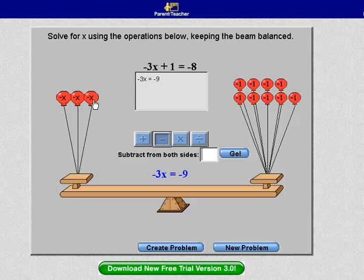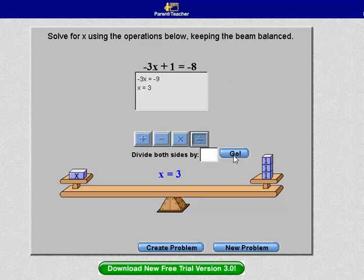So now we have negative 3x equals negative 9. Now I'm going to divide by that coefficient of negative 3, and hit Go. And I get x equals 3. I hope you enjoy playing this game at the NLVM, the National Library of Virtual Manipulatives.